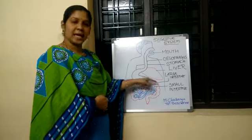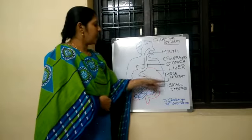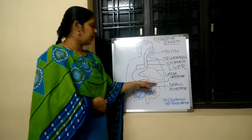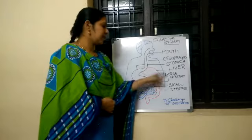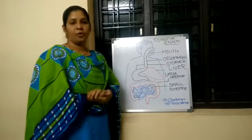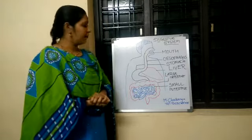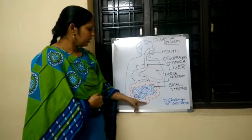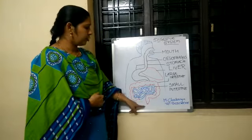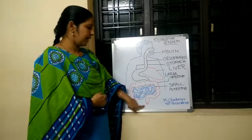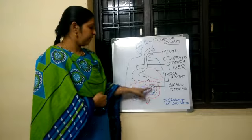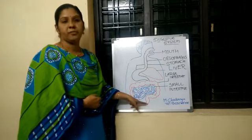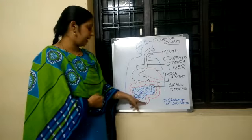In the large intestine, any extra amount of water is absorbed. It stores the food for some time and later sends the undigested food in the form of fecal matter outside through the anus.